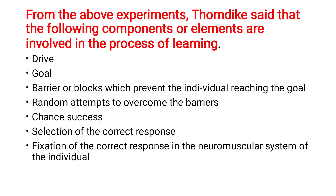From the above experiment, Thorndike identified the following components involved in learning: first, a strong drive — the cat's hunger motivates it to escape. Second, a goal or aim should be present. Third, a barrier or block prevents the individual from reaching the goal — here, the closed door is the barrier the cat must overcome to reach the fish.